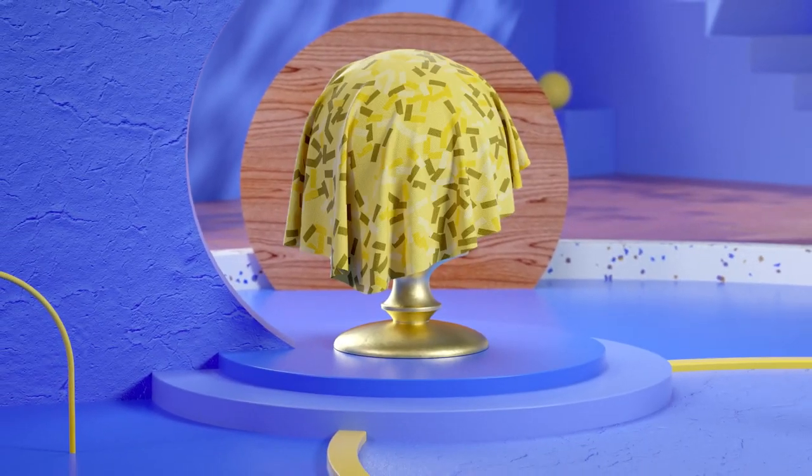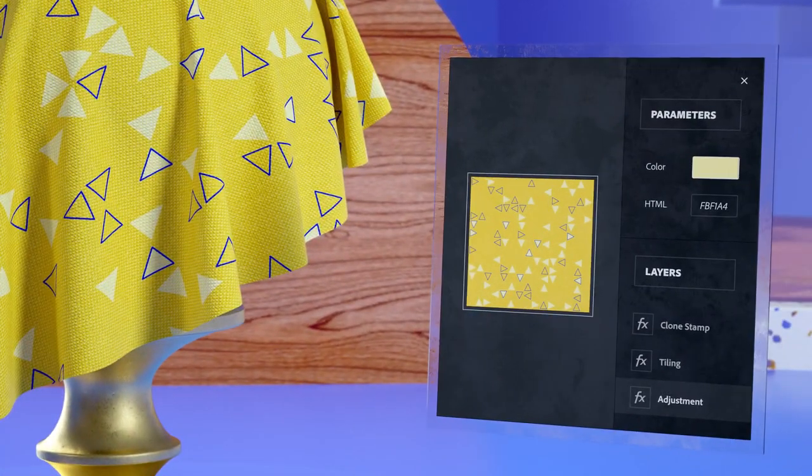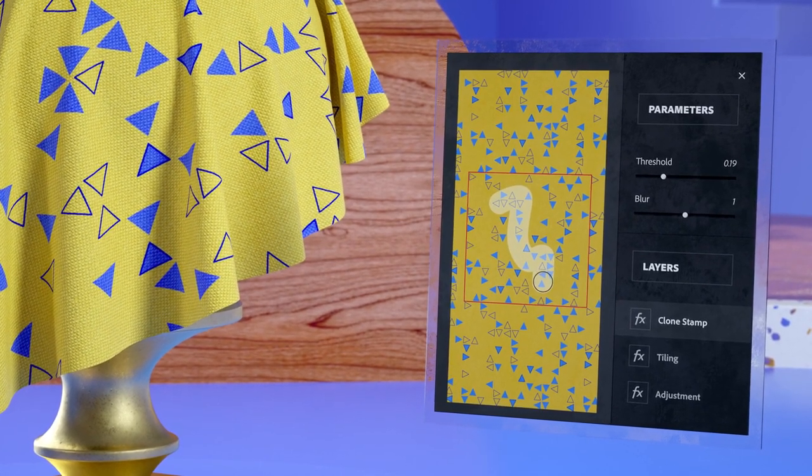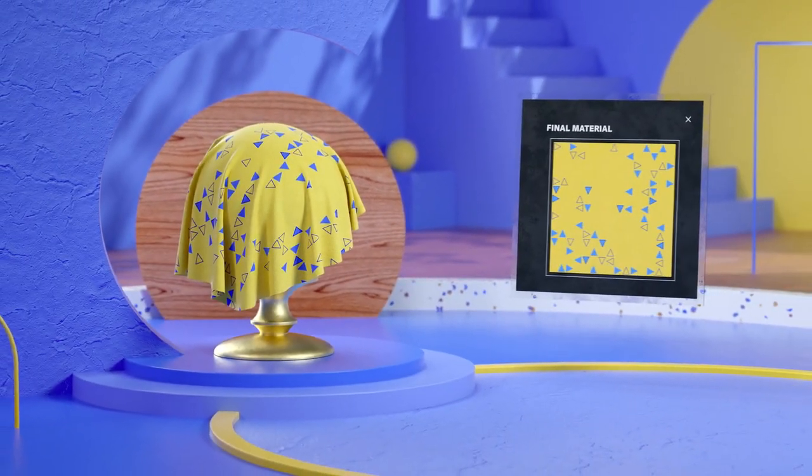Using a simple layer system, you can then further improve the material. Adjust a color cast, fix tiling on edges, and remove unwanted elements using familiar techniques like clone stamp. In a matter of minutes, your photograph comes to life as a 3D material.